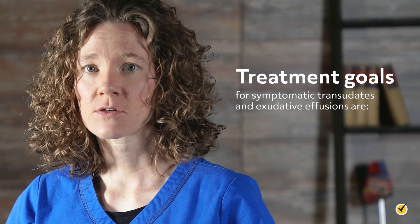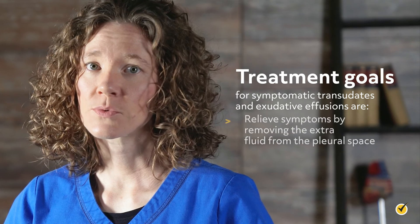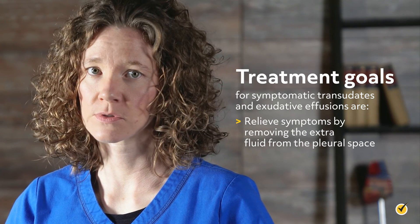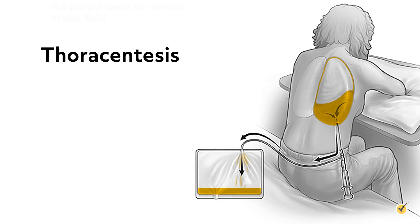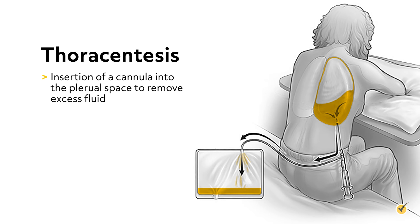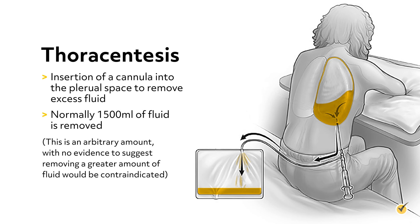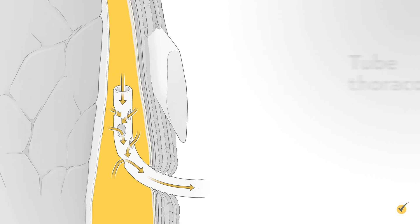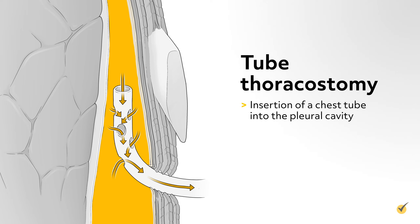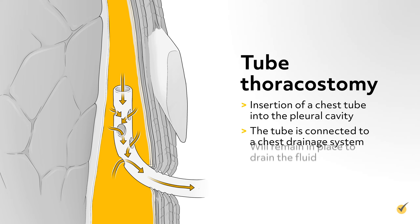Treatment goals for symptomatic transudates and exudative effusions are to relieve symptoms by removing the extra fluid from the pleural space and to prevent recurrence. Removal of the pleural fluid can be accomplished through two options. First, thoracentesis, which is the insertion of a cannula into the pleural space to remove excess fluid — normally 1500 mL of fluid is removed during the procedure. The second option is a tube thoracostomy: the insertion of a chest tube into the pleural cavity, connected to a chest drainage system, which will remain in place to drain the fluid.